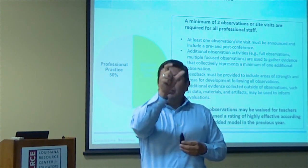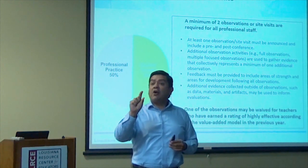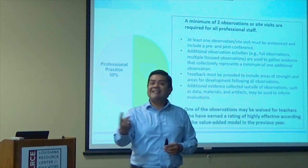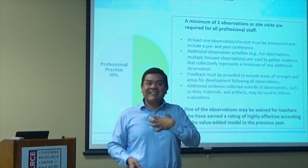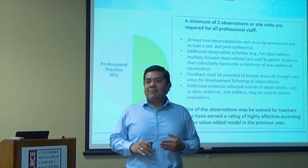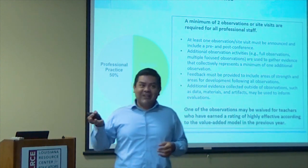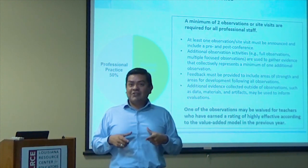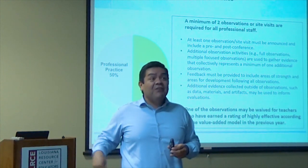We go in with the rubric and look at what constitutes a proficient score — a three — versus highly effective when it comes to questioning and discussion techniques from the third domain of instruction. Then we all have to come to consensus about what that should look like. When I was in the classroom, I either felt relief or anxiety depending on which administrator was evaluating me, because I knew how much leeway or scrutiny I'd face. That's why it's important for school leaders to calibrate their expectations — and that comes from doing informal walkthroughs together and debriefing about what you saw.